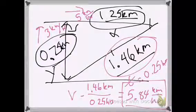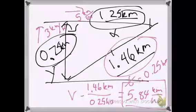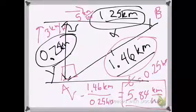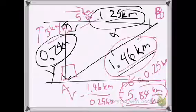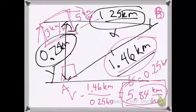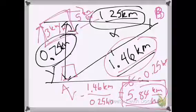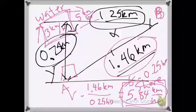The 5.84 km/h is the speed relative to someone observing from the shoreline — that person sees the boat travel 1.46 km in 0.25 hours from point A to point B. The three and five kilometers per hour are speeds relative to the water. In still water, the boat would travel at three kilometers per hour.